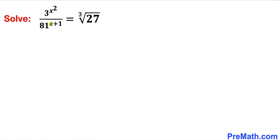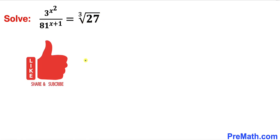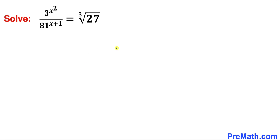Welcome to pre-math. In this video we are going to solve this given exponential equation: 3 to the power x squared divided by 81 to the power x plus 1, equal to the cube root of 27. Please don't forget to give a thumbs up and subscribe. Let's go ahead and get started with the solution.